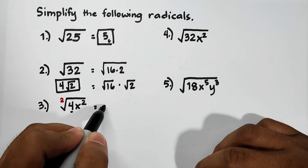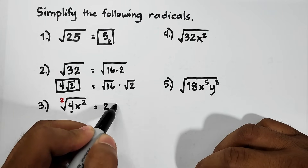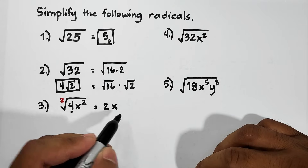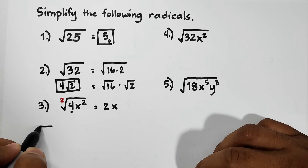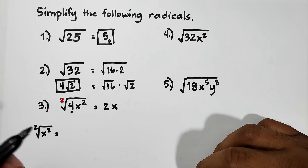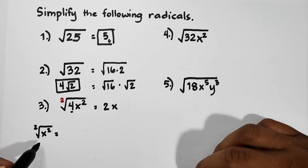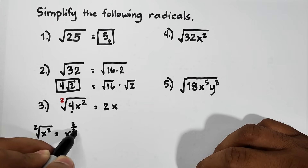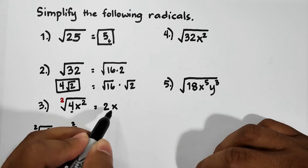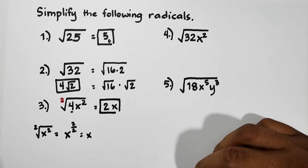We will get the square root of 4, which is equal to 2, and the square root of x squared is simply x. How did we get x? When you try to get the square root of x squared, if you convert this into an expression with rational exponent, it will become x raised to 2 over 2, where 2 over 2 is equal to 1. So that is simply x. Meaning in number 3, the final answer is 2x.